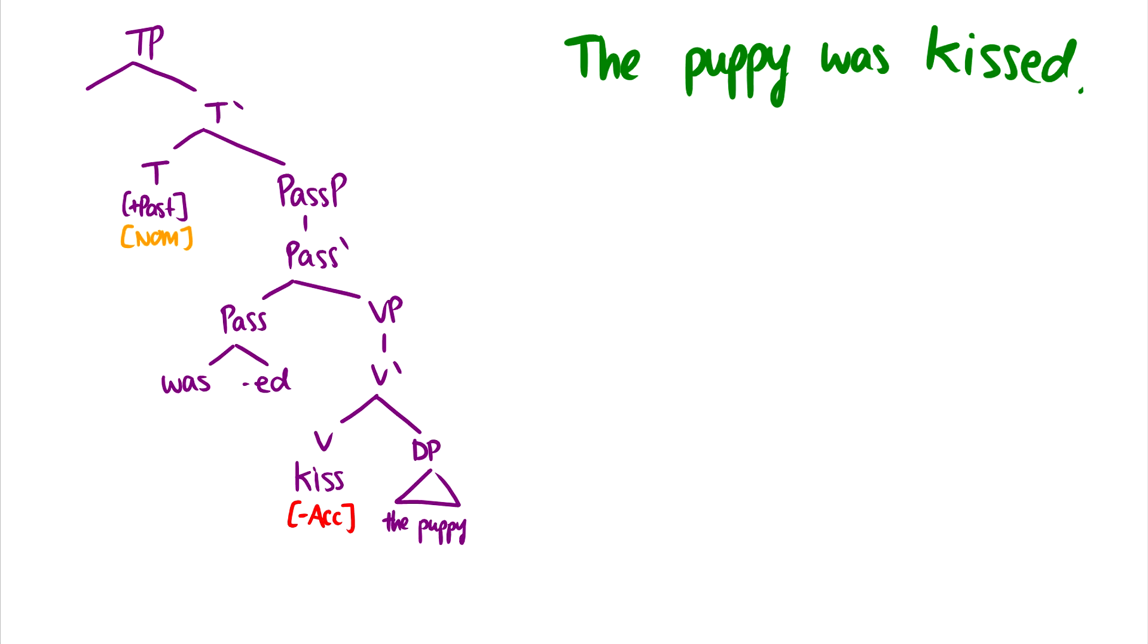Now the passive, the puppy was kissed. Two things to note. First of all, there's no agent. So the spec VP does not exist. There's no agent to give. The second thing is that kiss is minus accusative, meaning that the puppy can't get case from kiss. So right now the puppy is the theme, but it has no case.